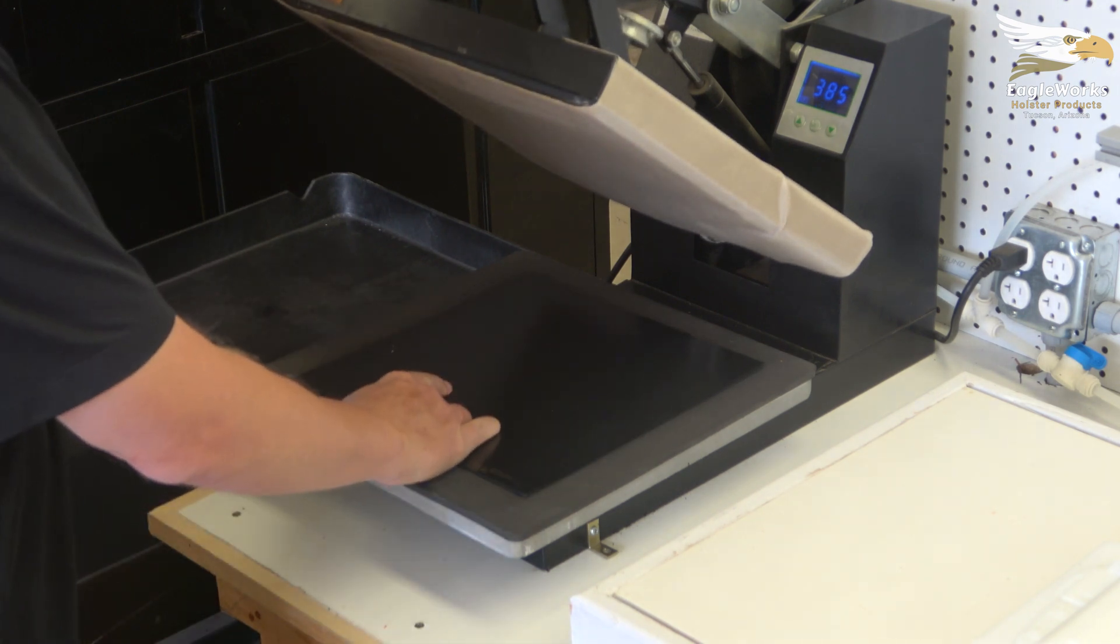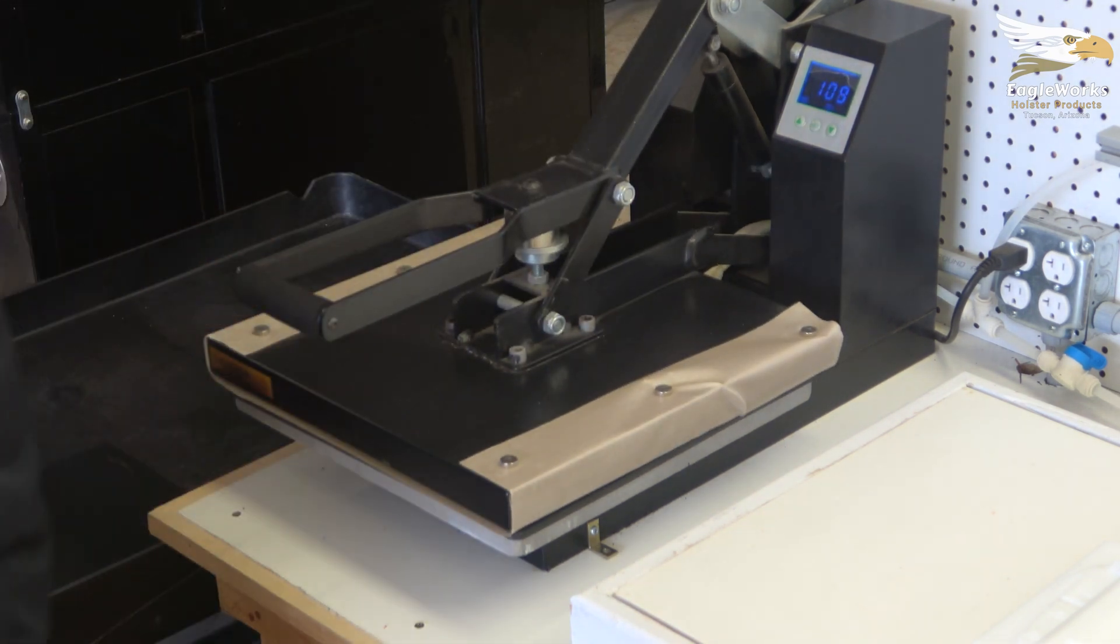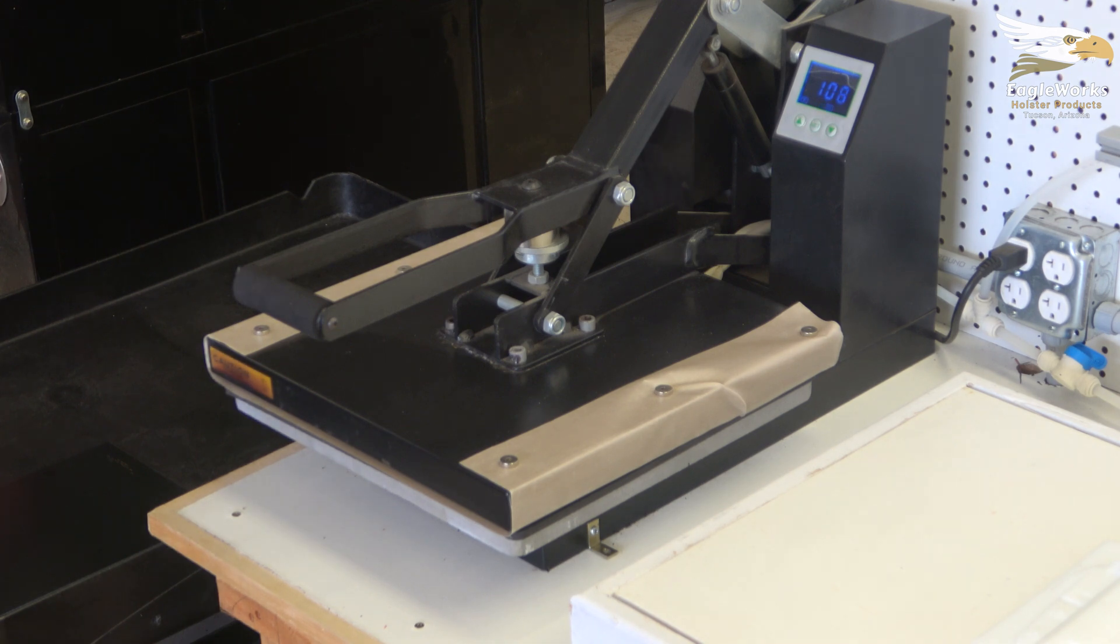When you're ready to heat your plastic, it's important to make sure that the smooth side is facing up. In our shop, most all holsters start as 12 inch square pre-cuts. Adjust the size of your plastic blanks for your own forming practices.